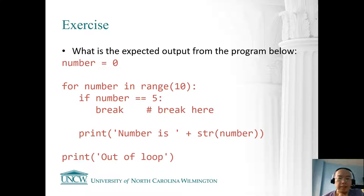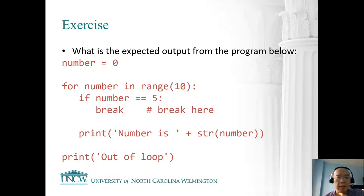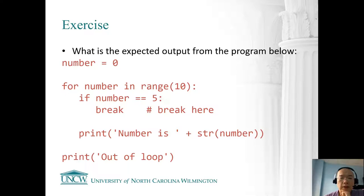Let's see the second example. We start with number equals zero, and then we have a for loop. If the number is five, we do a break. Outside the if, we print 'the number is' and then the number, and eventually we print 'out of loop'. So what will be the expected output for this one?